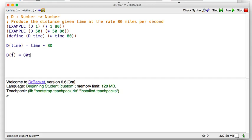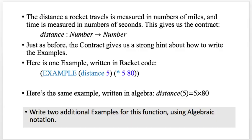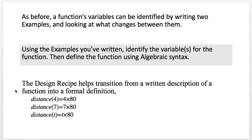So that's how we'd write, in algebra, that same formula: d of t, the distance function at a given time, is 80 times t. Write two additional examples — here's an example of distance of 5. Pause now and write two additional examples in the place provided in your workbook.